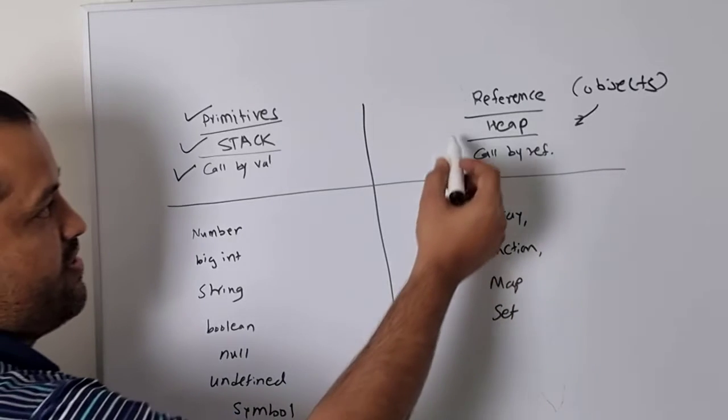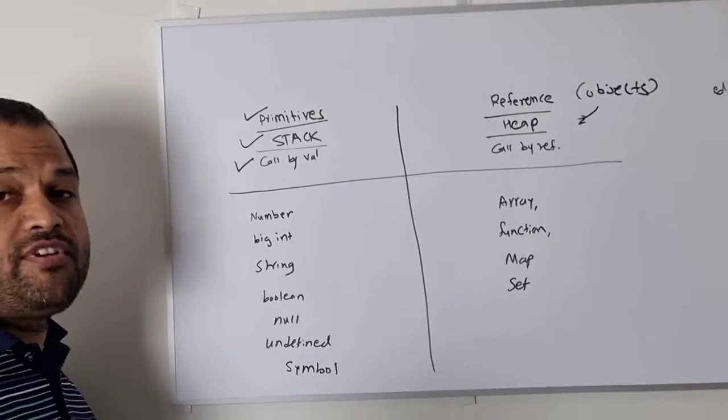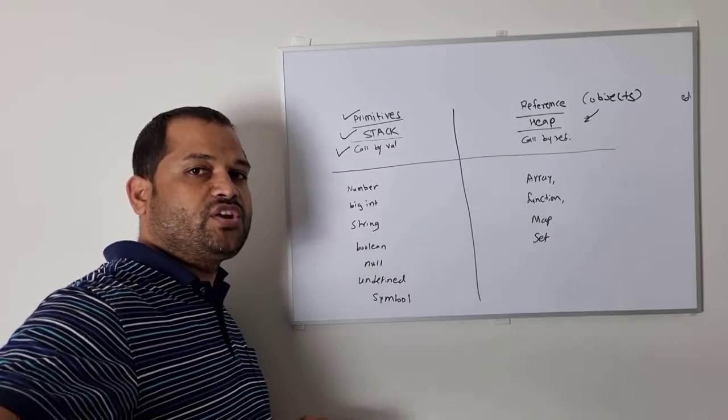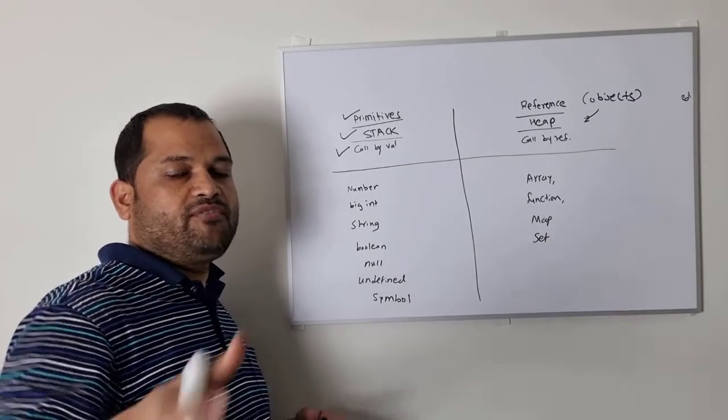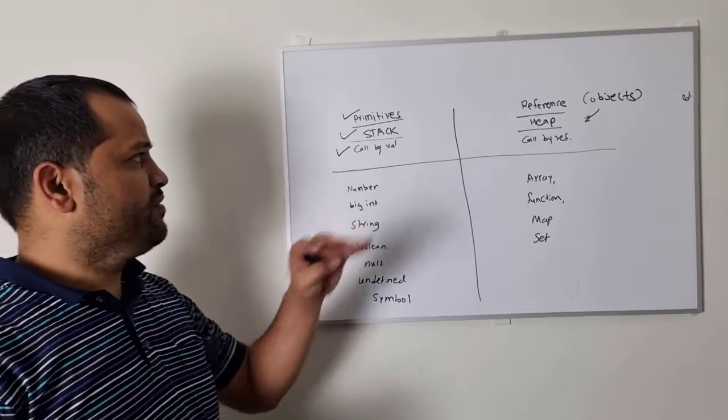But in case of reference types or object types, if you pass an object as an argument to a function, then that object reference will be sent. So if you make changes in that object inside the function that you called, the changes will be reflected everywhere. That is the major difference between primitives and reference types.